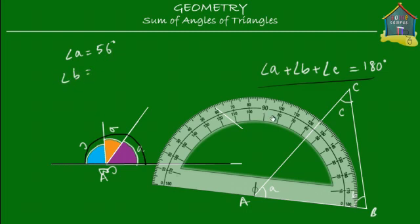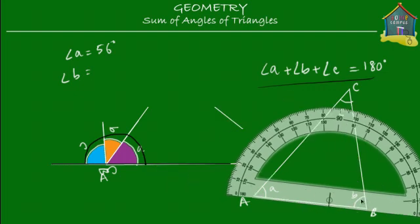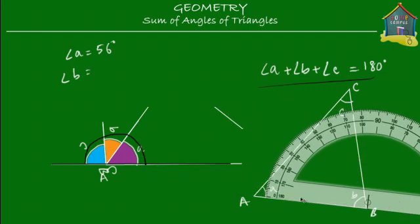Well, I put the protractor on angle B, center it here. And we see that the angle ABC is equal to 75 degrees. So I write that down, that angle B is equal to 75 degrees.